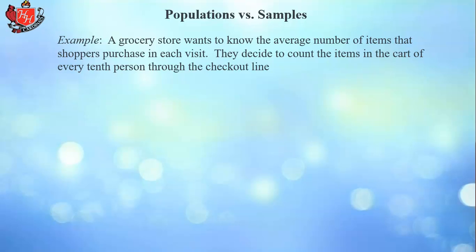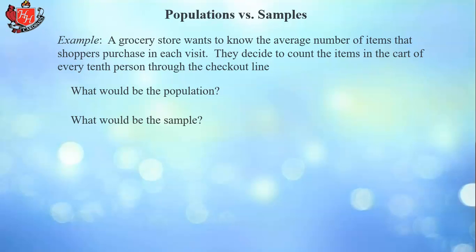Here's an example: a grocery store wants to know the average number of items that shoppers purchase in each visit. They decide to count the items in the cart of every tenth person through the checkout line. The population would be all customers of the grocery store, and the sample would be every tenth person. They take a small subset and assume whatever is true of that subset will be true of the entire population. If done properly, it will be very accurate. The parameter is the average number of items shoppers purchase per visit.